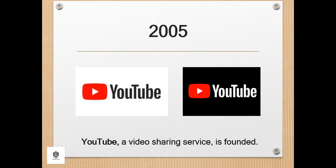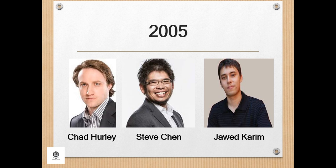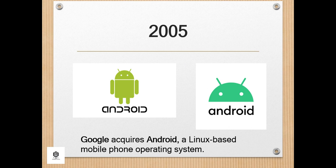In 2005, YouTube, a video sharing service, was founded by Jawed Karim, Steve Chen, and Chad Hurley when they worked for PayPal. Hurley had studied design at Indiana University of Pennsylvania, while Chen and Karim studied computer science at the University of Illinois at Urbana-Champaign. YouTube's initial headquarters was above a pizzeria and Japanese restaurant in San Mateo, California. Also in 2005, Google acquired Android, a Linux-based mobile phone operating system.